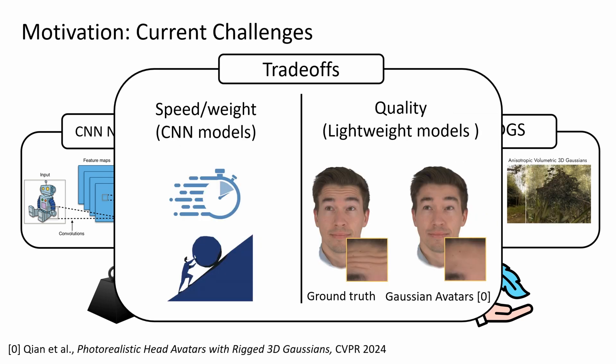Lightweight methods often face challenges in accurately representing expressions, wrinkles, scales, shadows, or teeth. While CNN-based architectures improve quality, they often come at the cost of higher inference times and larger memory footprint, with checkpoints exceeding hundreds of megabytes in size.